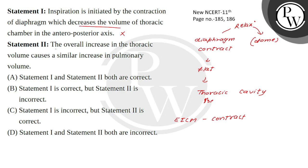Statement 2: The overall increase in thoracic volume causes a similar increase in pulmonary volume. To understand this, look at the lung structure — the outer layer is the parietal pleura and the inner one is the visceral pleura.